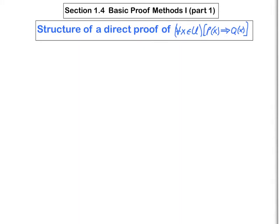Now this statement is supposed to hold for all x in U, and so we have to prove that no matter which x in our universe we select, the corresponding conditional statement P of x implies Q of x is true. And so we have to begin by giving ourselves a completely general or generic x in our universe.